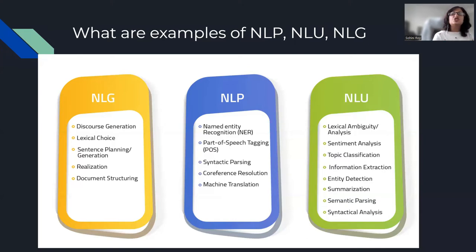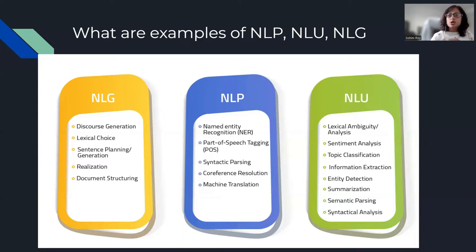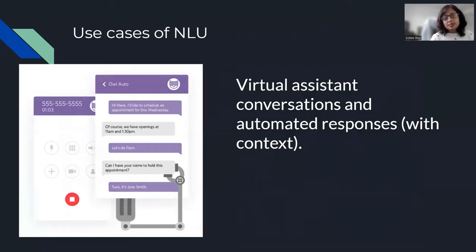NLG — natural language generation — is whenever you are generating text. You understand the context and a summary has been created, and now you want to generate text corresponding to that understanding. Sentence generation, realization, and question answering all fall under NLG. Whenever you ask a question to Alexa, Siri, or Google and they give you a response, that aspect is natural language generation.